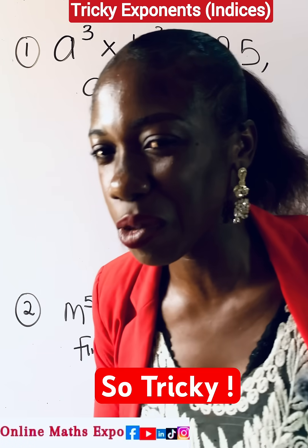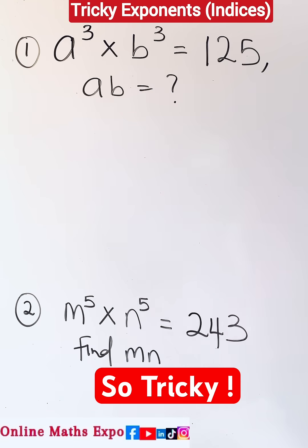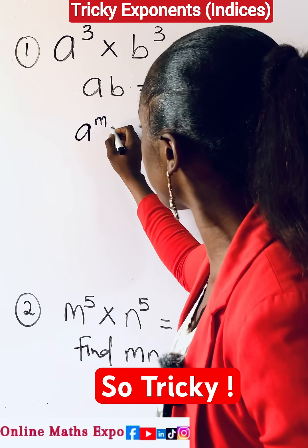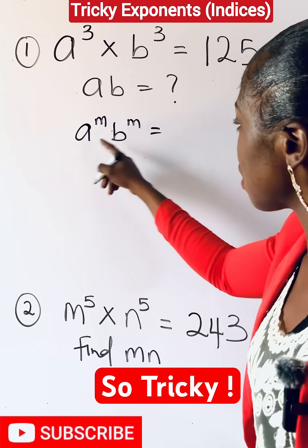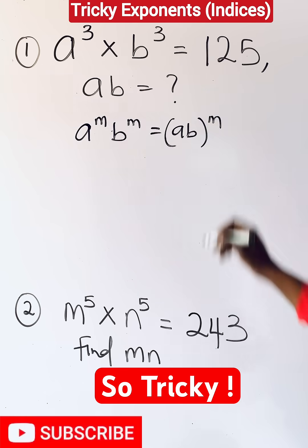This is just so easy. Let me teach you what to do. This is what we are given to find: ab. Now just remember that for every time you have a raised to power m multiplying b raised to power of m, it simply means a we multiply b and you raise it to the power of m.